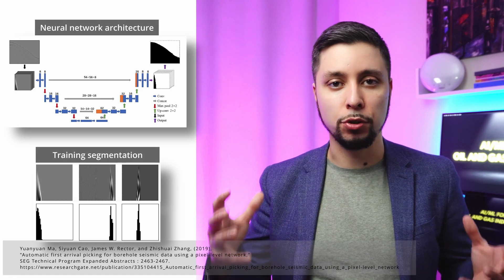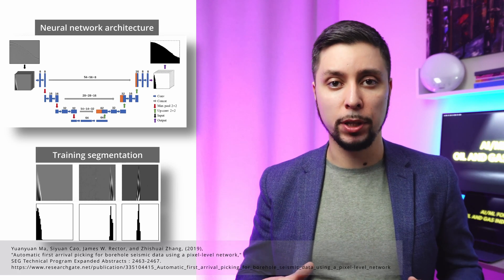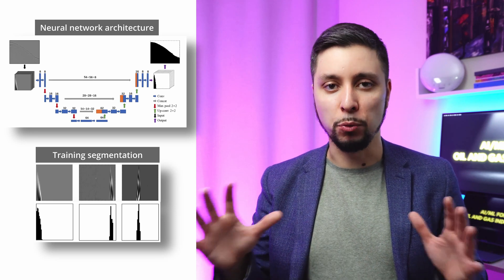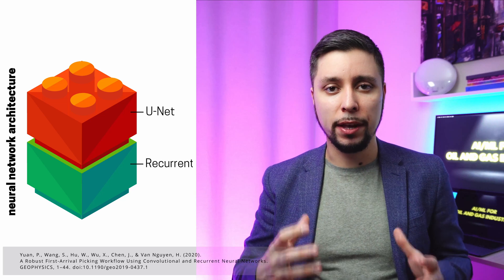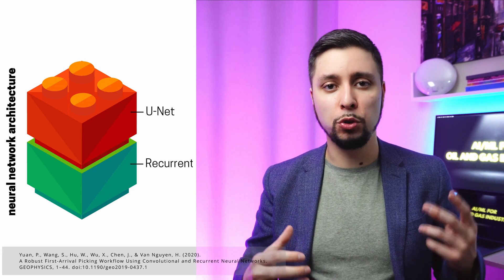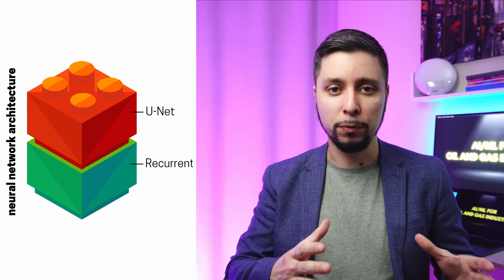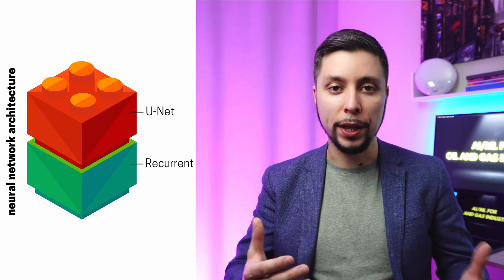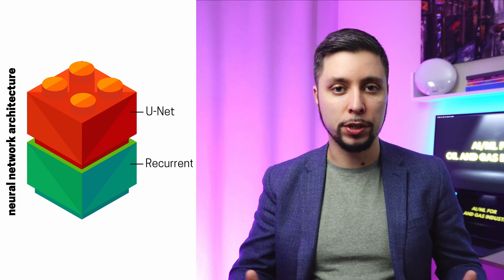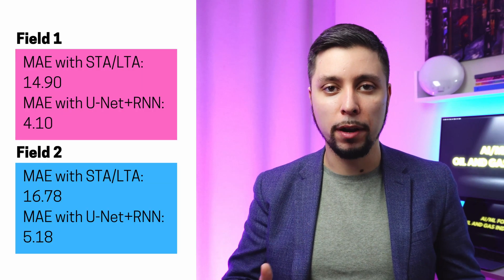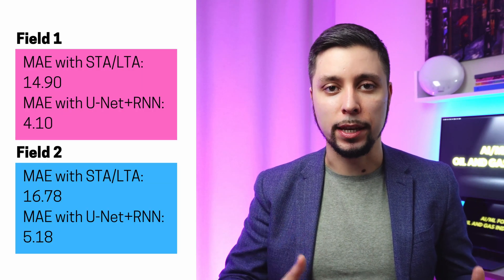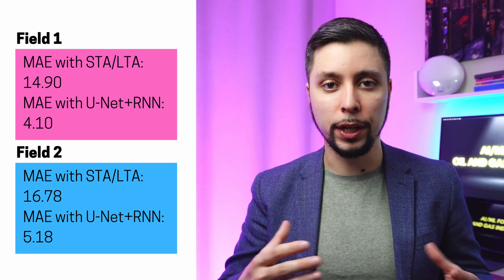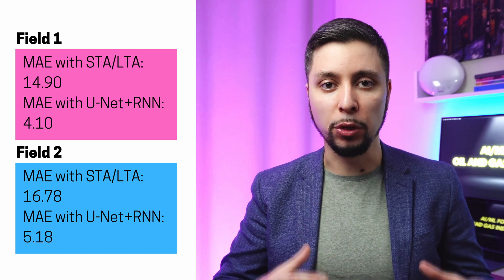Later publications started treating the problem as image segmentation, where each point before the first arrival on the trace is set to zero and one afterwards. The most recent publication I've read proposes using two neural networks — U-Net for segmentation and a recurrent network for first-break picking. They also propose a weight adaptation approach for generalization on new datasets, and compare deep learning with the conventional STA/LTA method on real field data, achieving outstanding results on all test cases, including when noise level is high.